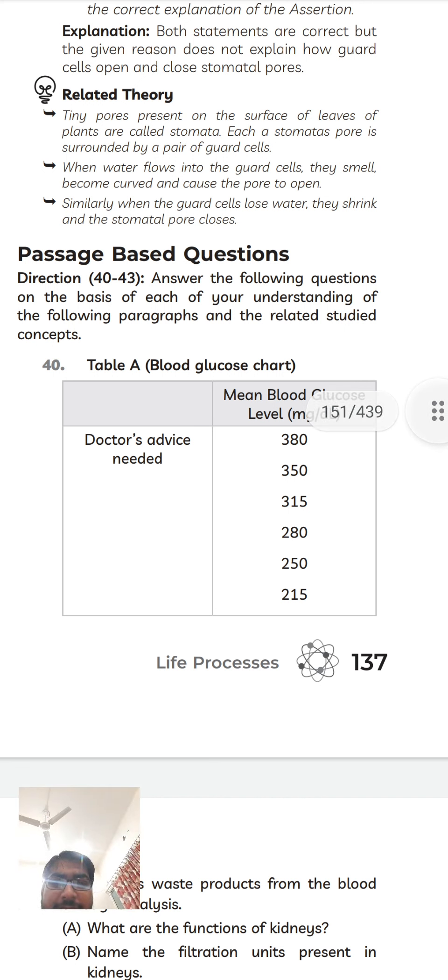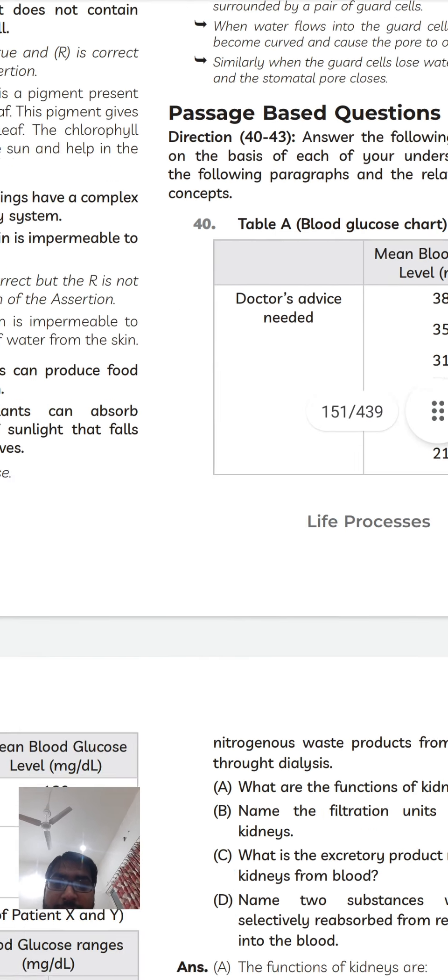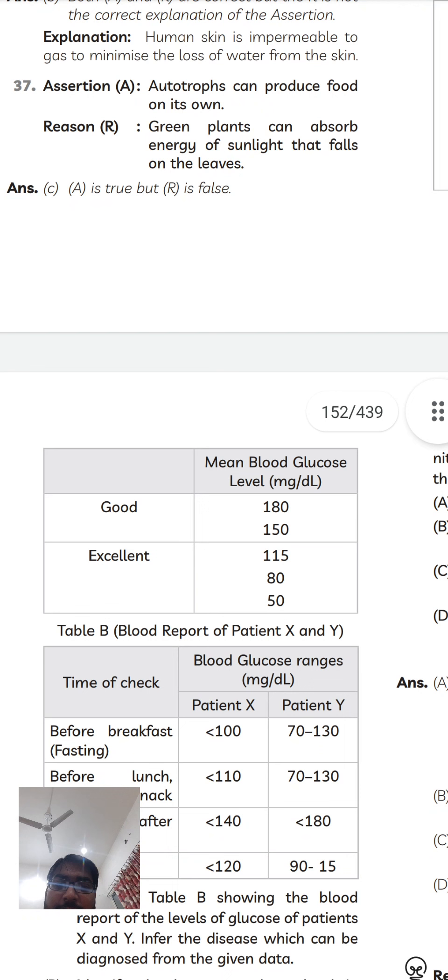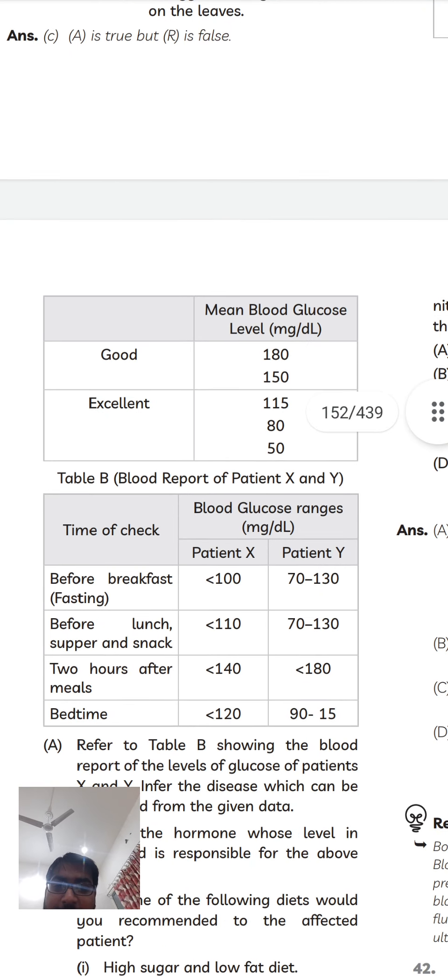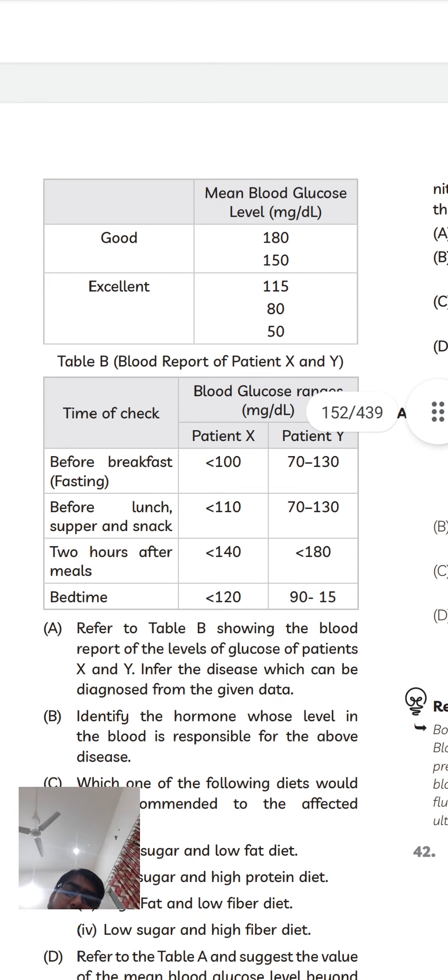This is our paragraph based question from CBSE. The question is: blood glucose and doctor's advice needed. The values are 380, 350, 315, 280, 250, 215. If you think about this code: 180, 150, excellent, 115, 80 and 50. If you look at the table, okay? Question number 1.